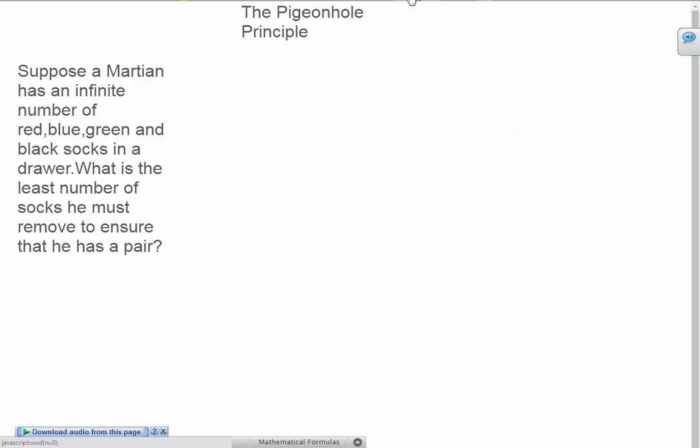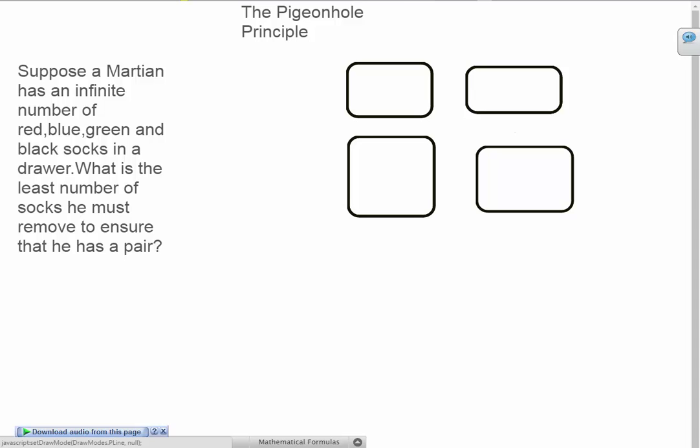The question basically boils down to this. You have four pigeonholes, four pigeonholes here, and this is for the color red, this is for the color green, this is blue, and this is black.